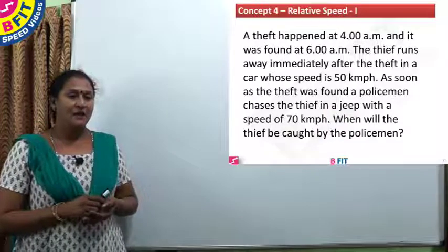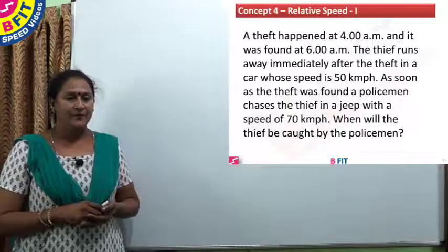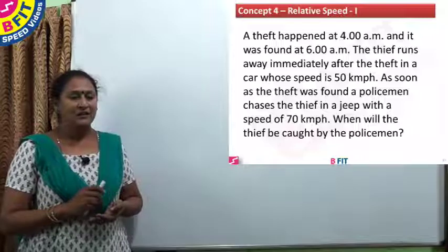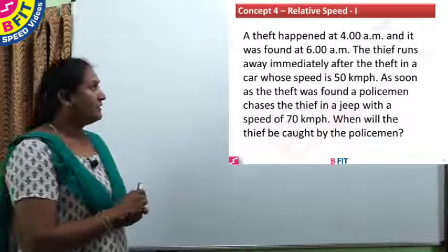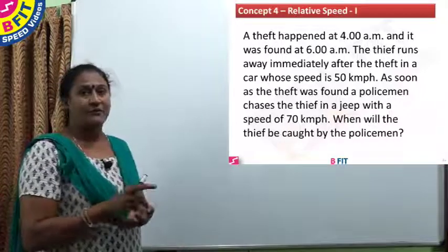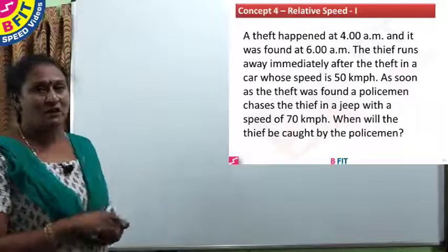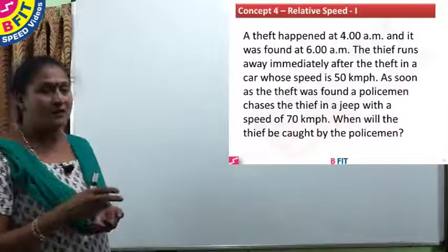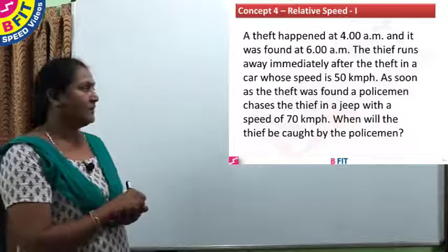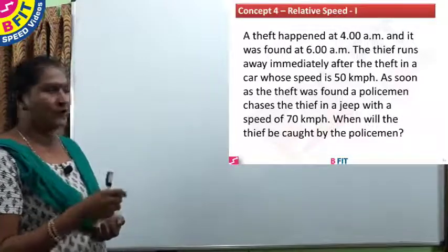Example: A theft happened at 4 a.m. and was found at 6 a.m. The thief runs away immediately after the theft in a car at 50 km/h. As soon as the theft was found, a policeman chases the thief in a jeep at 70 km/h. When will the thief be caught? The theft was found after 2 hours. By that time the thief will be 100 kilometers away from the police.